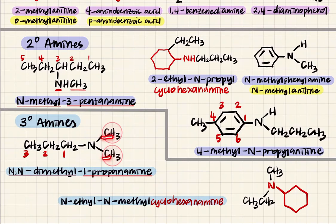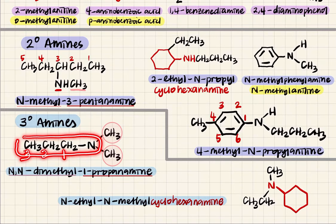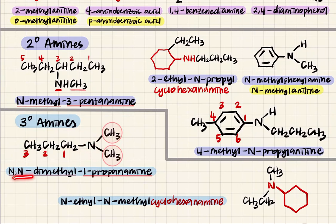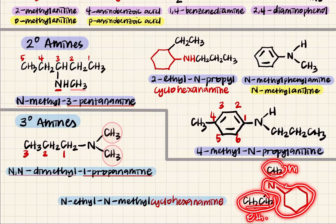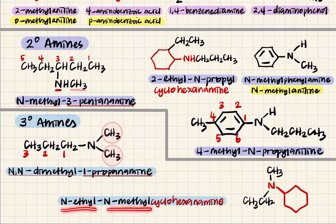For tertiary amines with 3 carbons attached to nitrogen: find the longest carbon chain — 1, 2, 3 carbons, so 1-propanamine. Then you have N,N-dimethyl because two methyl groups are attached to nitrogen. For a cyclic tertiary amine: cyclohexanamine is the parent (6 carbons). Circle the substituents: methyl and ethyl — both attached to nitrogen. The full name is N-ethyl-N-methyl-cyclohexanamine.